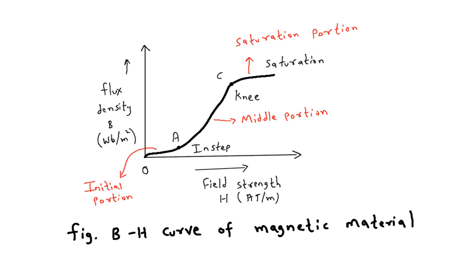Suppose there is a coil wound on a core. The core may be iron core, steel core, or any other material, and we apply EMF to the coil.